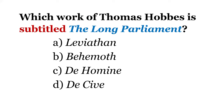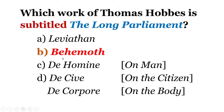Next. Which work of Thomas Hobbes is subtitled 'The Long Parliament'? A: Leviathan. B: Behemoth. C: De Homine. D: De Cive. Answer: B, Behemoth, whose subtitle is 'The Long Parliament.' But when we think of Thomas Hobbes, we think of his famous work Leviathan.